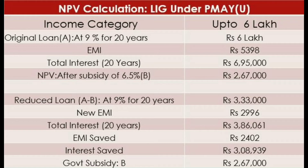The difference between the LIG category and the EWS category: the EWS category income is up to 3 lakhs, and the LIG category is up to 6 lakhs. In terms of loan amount, the EWS category is 2 lakhs and the loan amount for LIG is up to 6 lakhs. The EWS category has a 9% rate of interest.